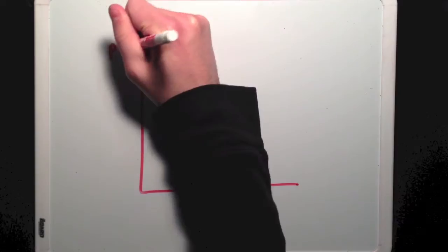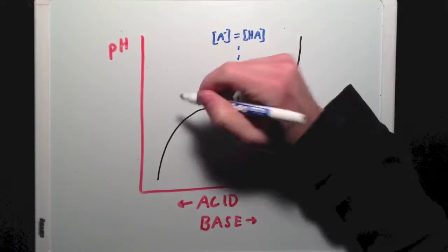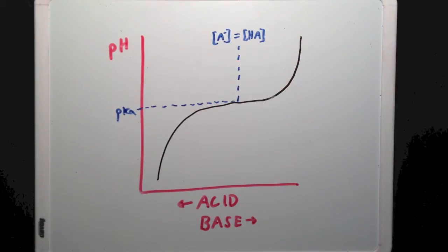If you look at this on a titration curve, we see that when the solution's pH is equal to the buffer's pKa, we're right in the middle of the buffering zone, which means the buffer will be effective against both incoming acid and base.